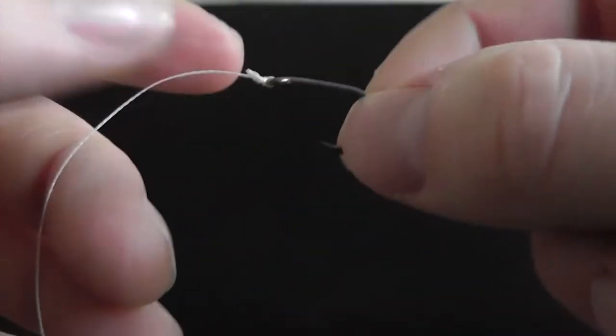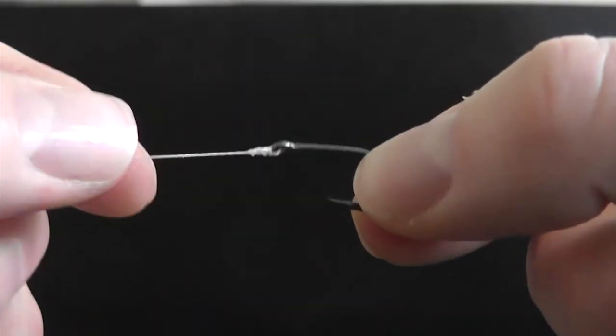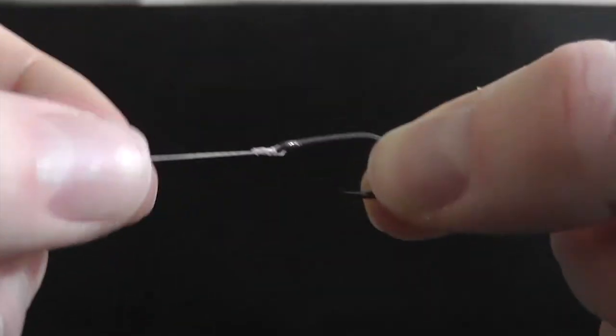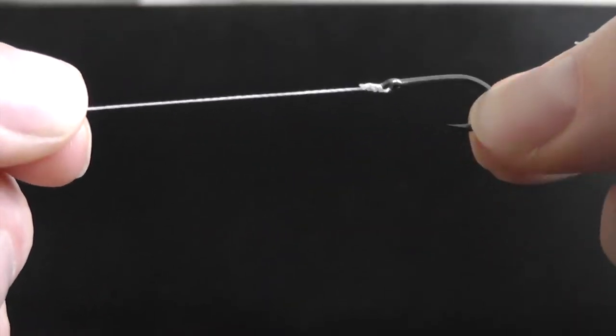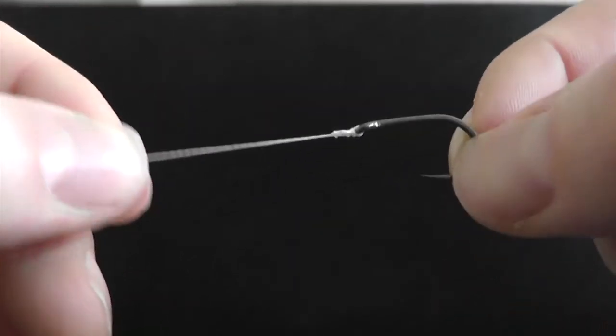Hello and welcome to another video. This time we're going to take a look at one of the many ways we can attach a hook to our hook link or main line, and we're going to start with the improved clinch.